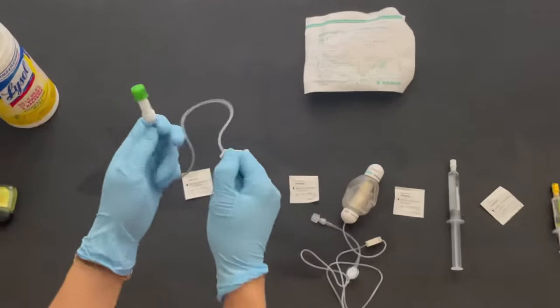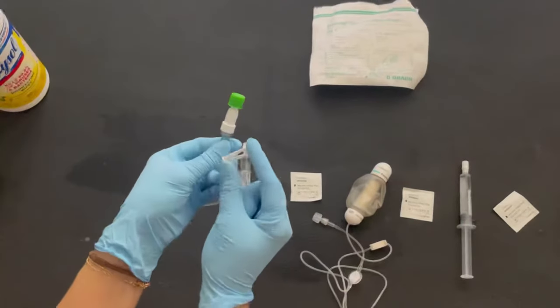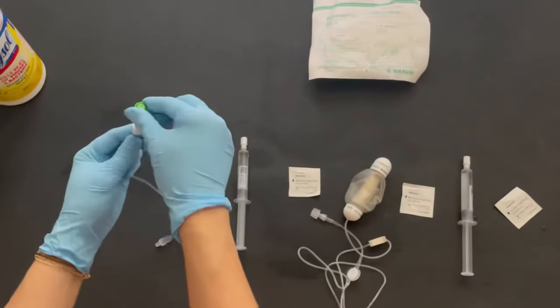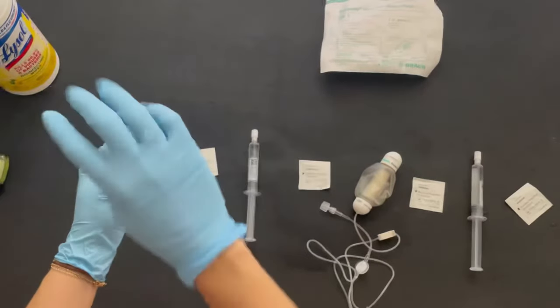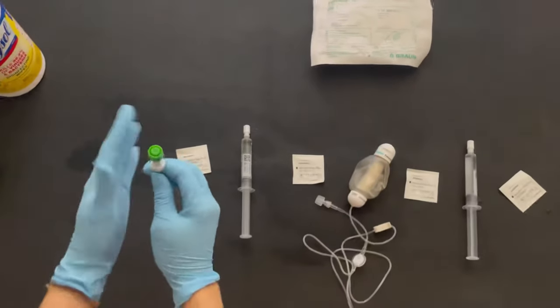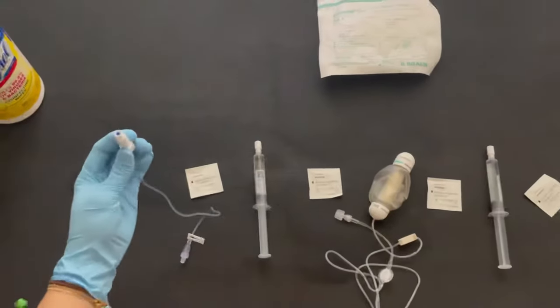So this is your extension set. You can also pretend this is your central line, but because this is an extension set, it can be hooked onto your central line. Go ahead and use your dominant hand to maneuver while keeping the other side still.